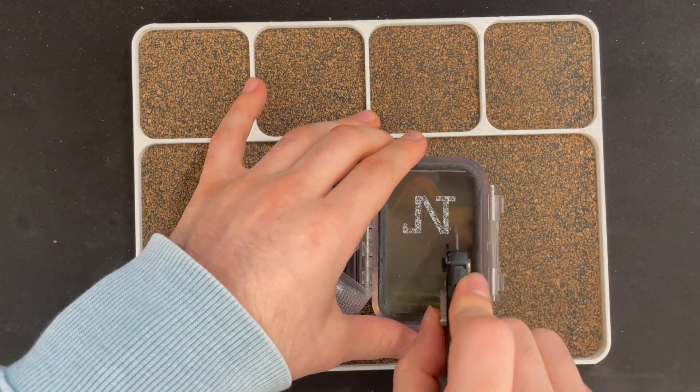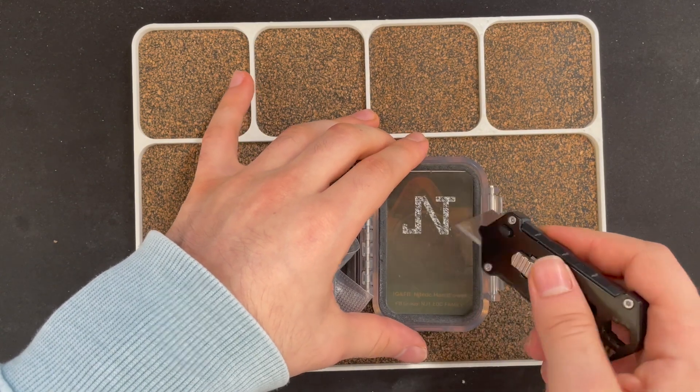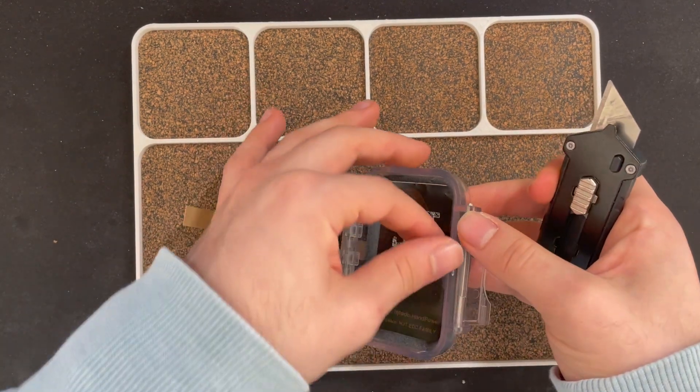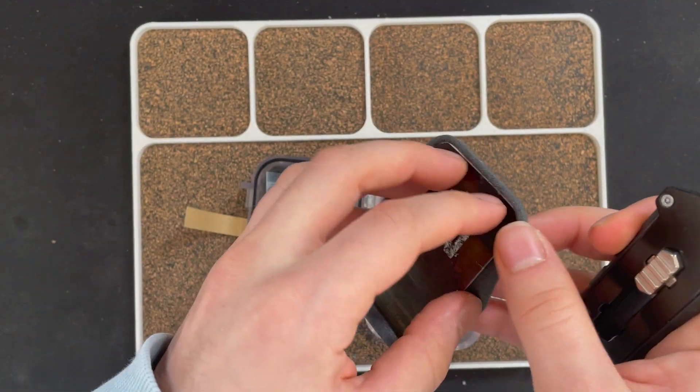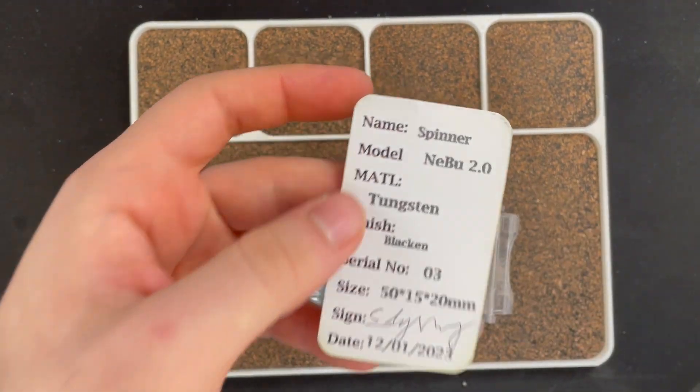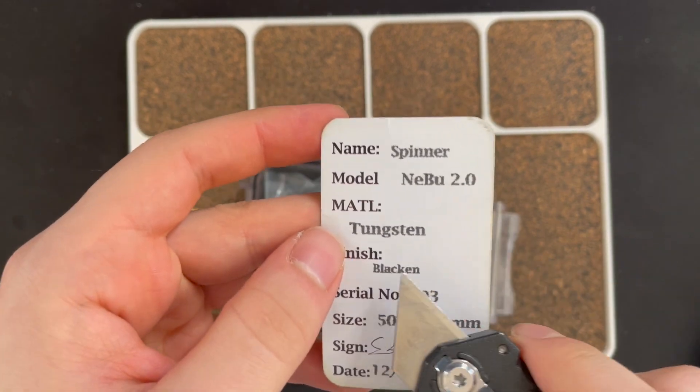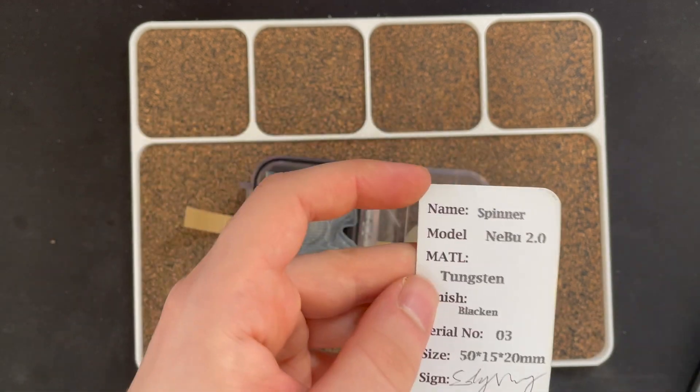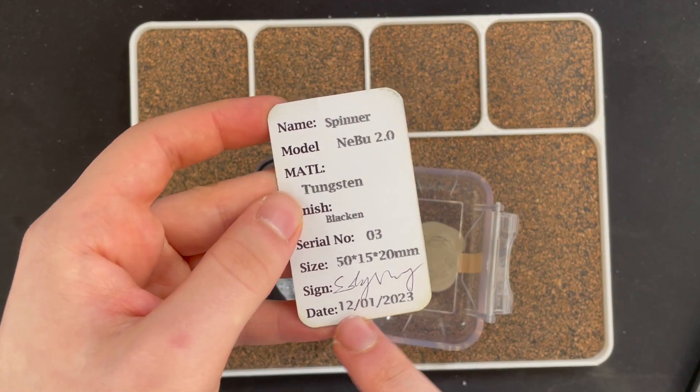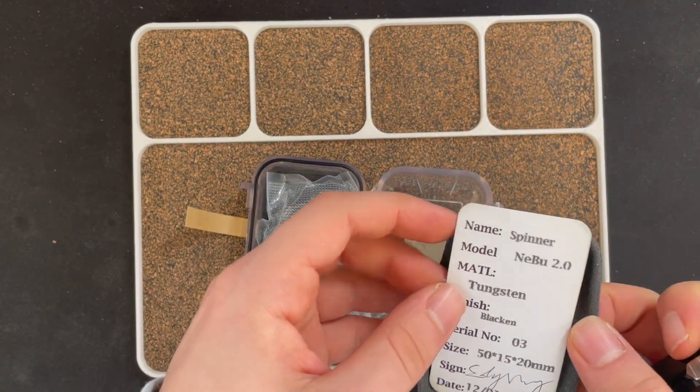So I did get the machine finish and then blackened version. There you go. Spinner Nobu, tungsten, blackened, number 3. There's the size, but I want to also measure it as well myself. 12-1. Great.